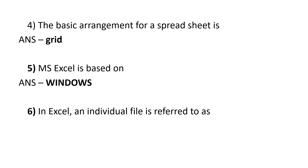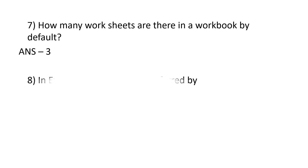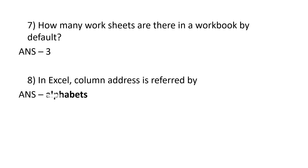MS Excel is based on Windows. In Excel, an individual file is referred to as a worksheet. How many worksheets are there in a workbook by default? Three. In Excel, column address is referred by alphabets.